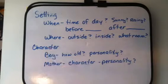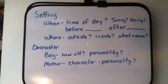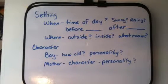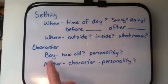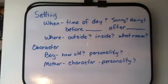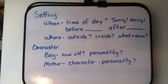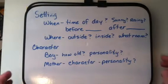Where did the story take place? Was it outside? Was it inside? If it was inside, was it in the kitchen, or was it in the den? And the characters — there are two characters in the story: the boy and his mother. You can describe the boy, say how old he was, and what was his personality. And the mother — what was her character or personality?